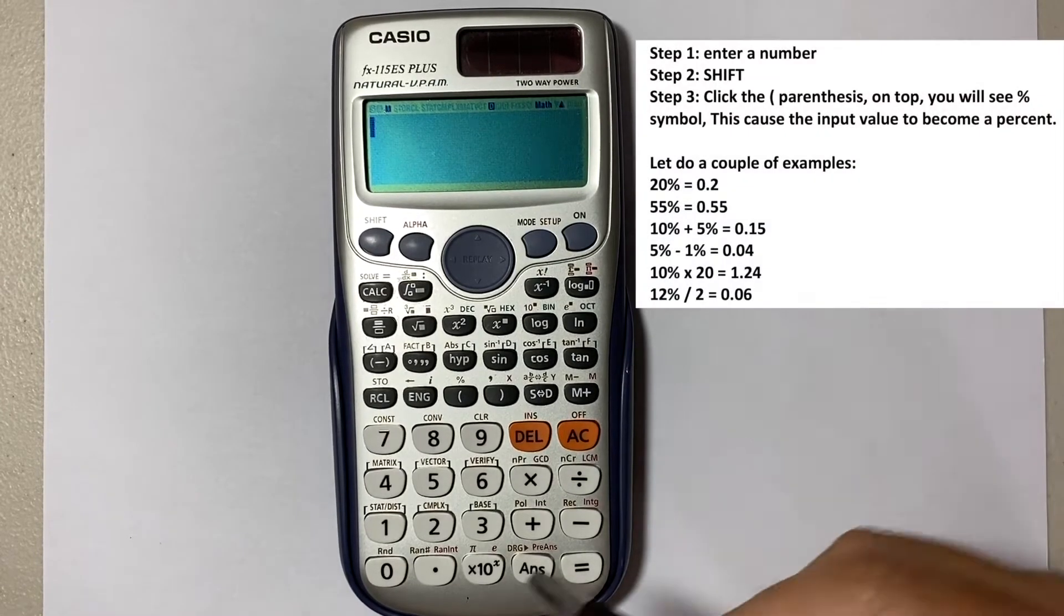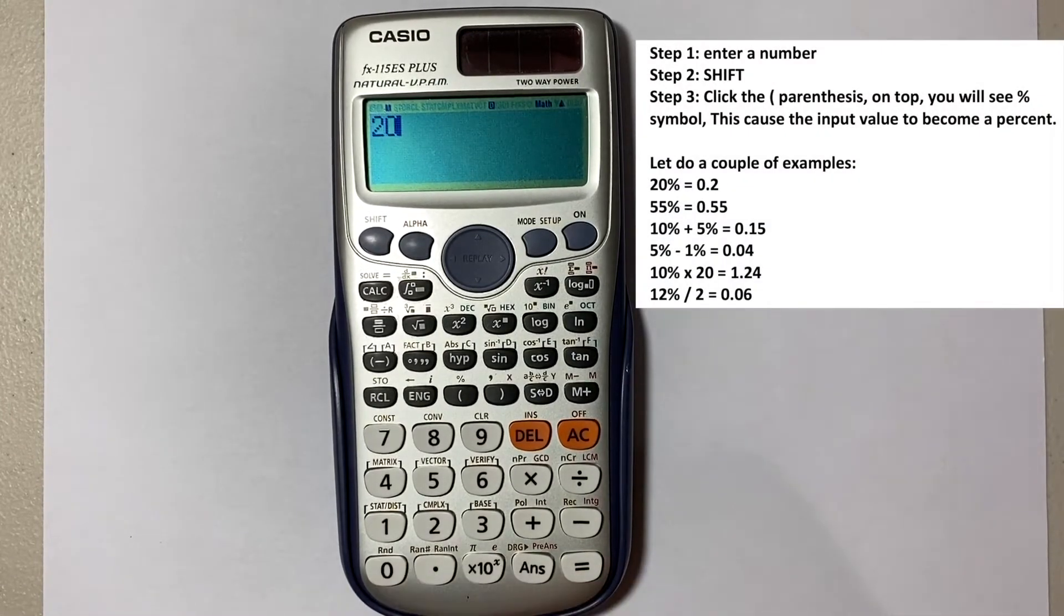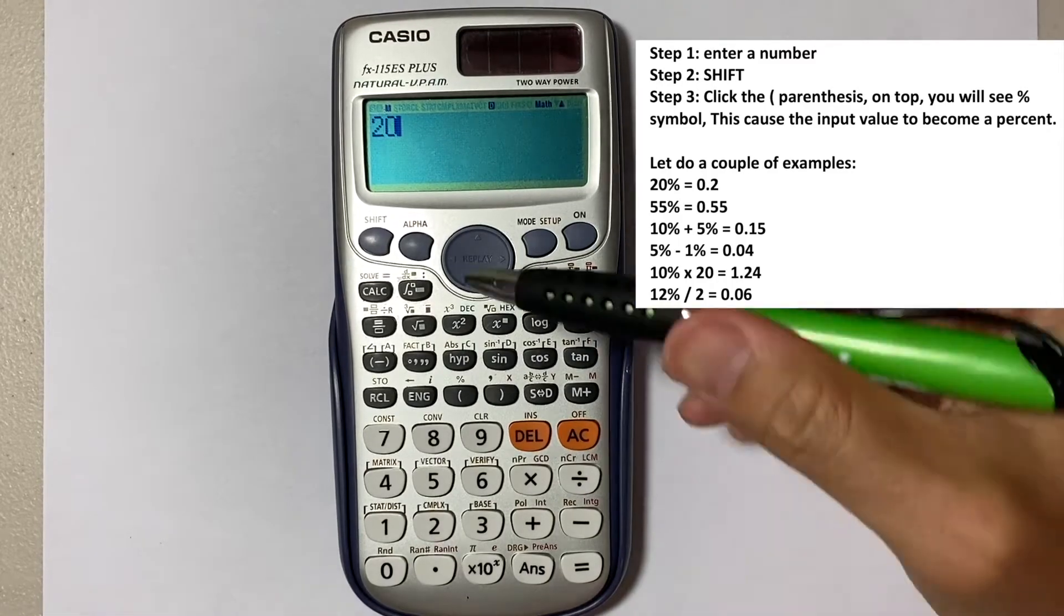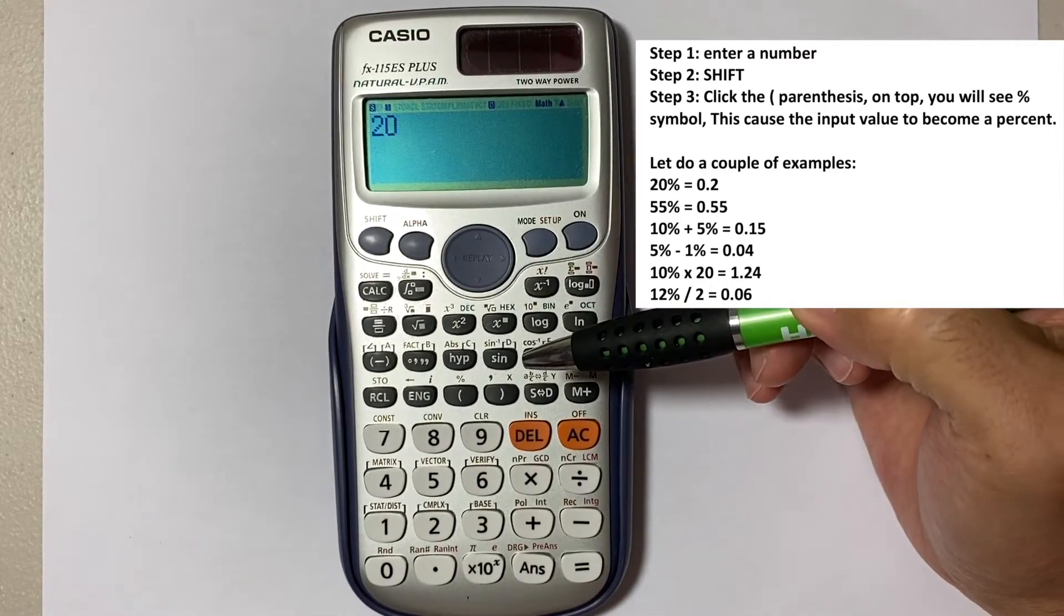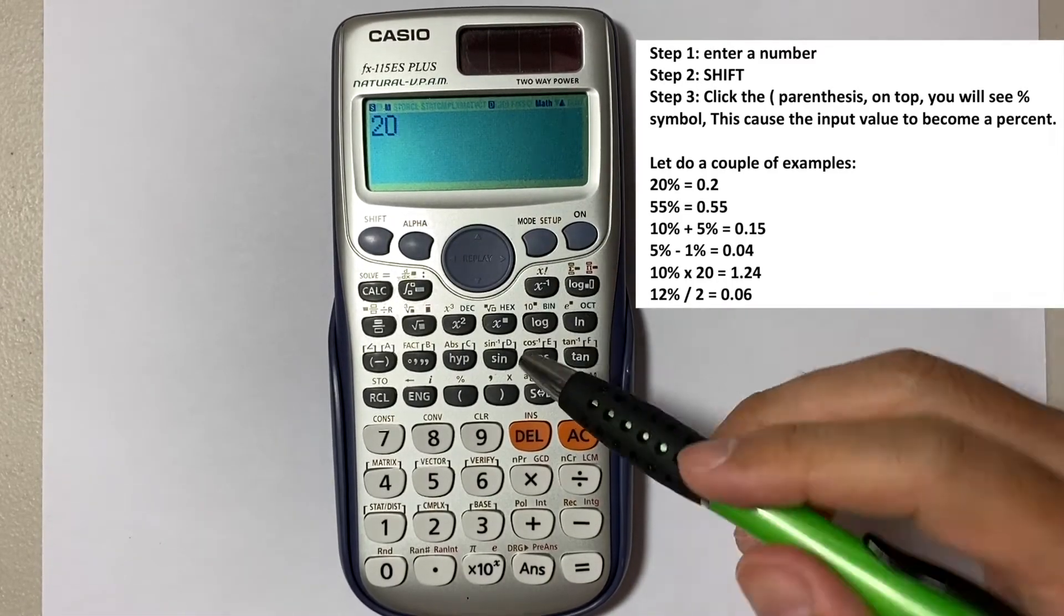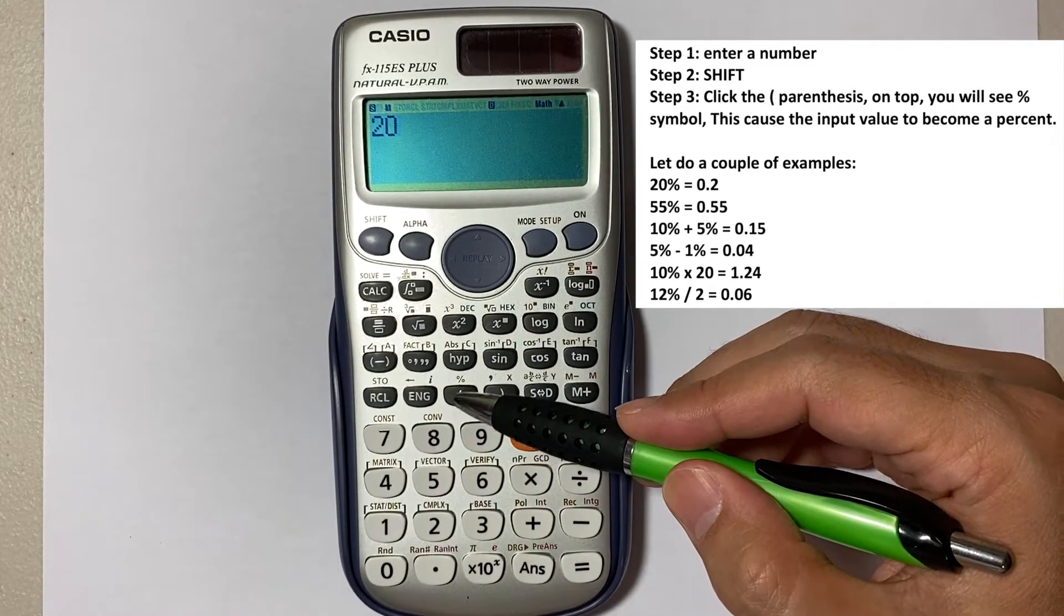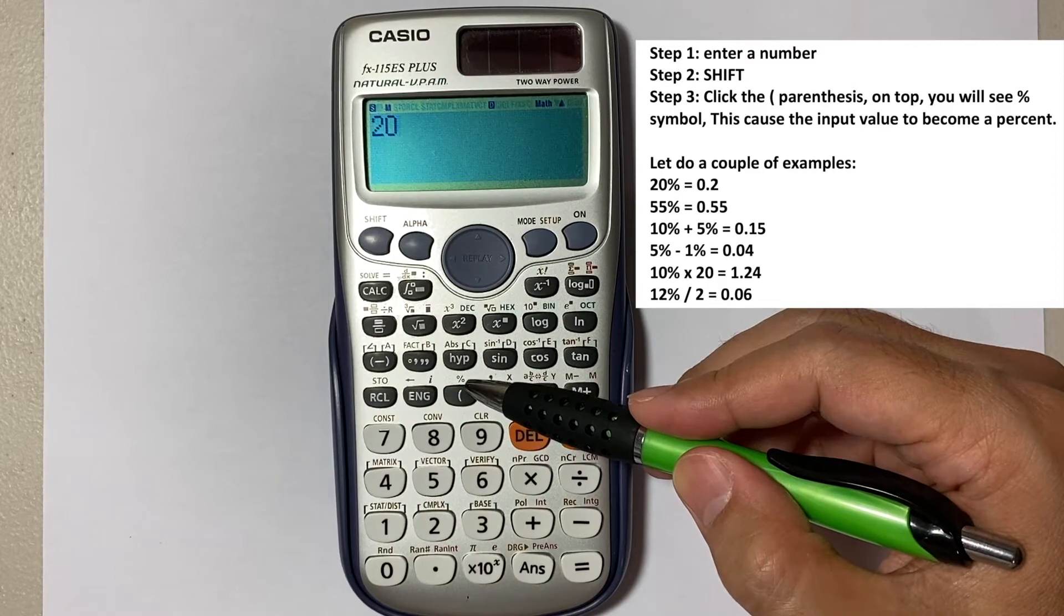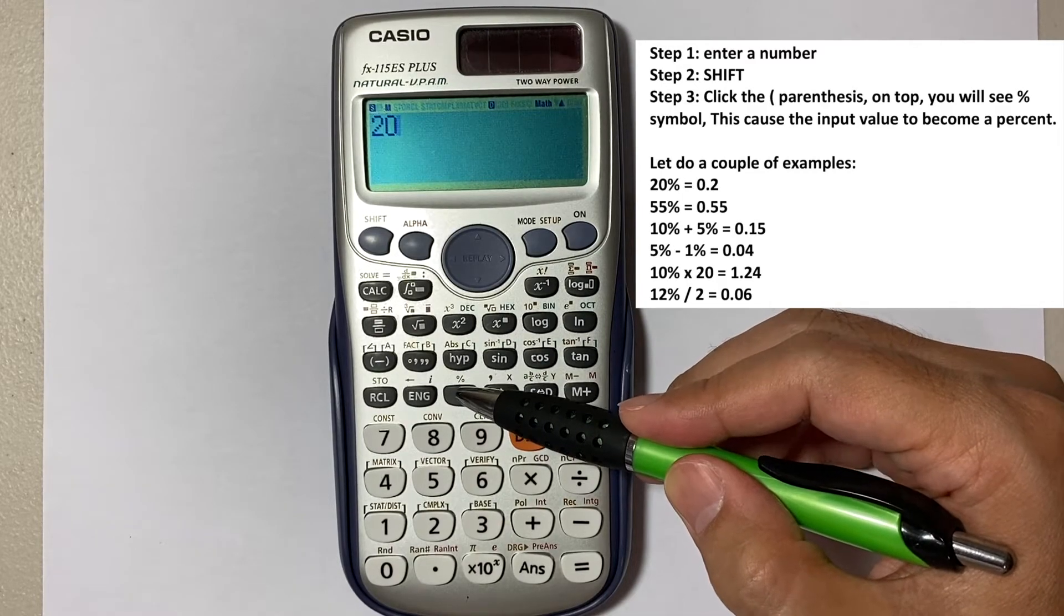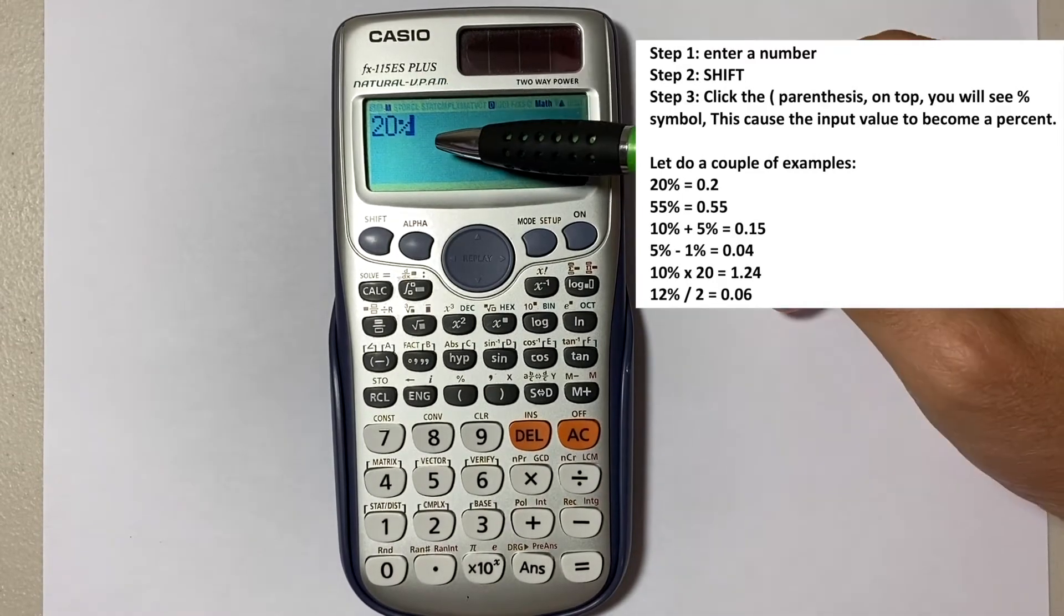Step number one: enter a number. Step number two: click on the shift, and then you will look at this section right here with open parentheses on top. You see a percent symbol. Click that.